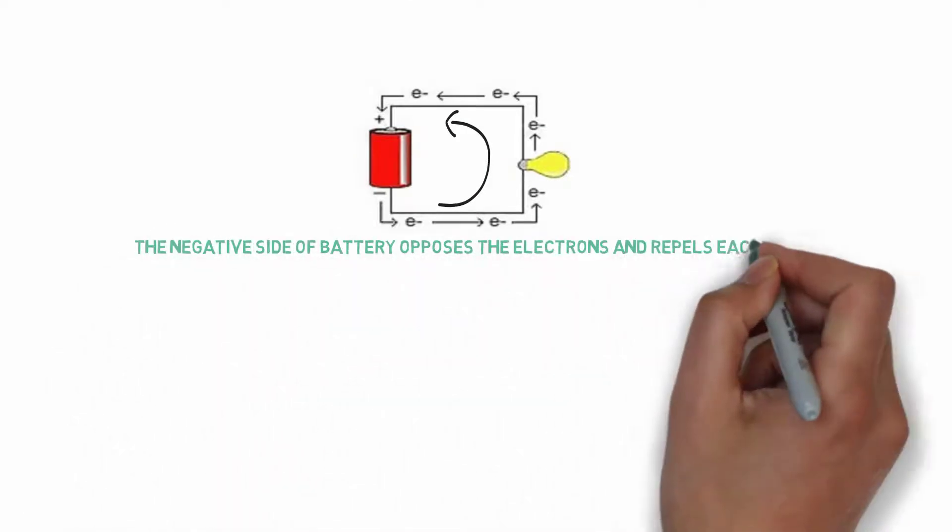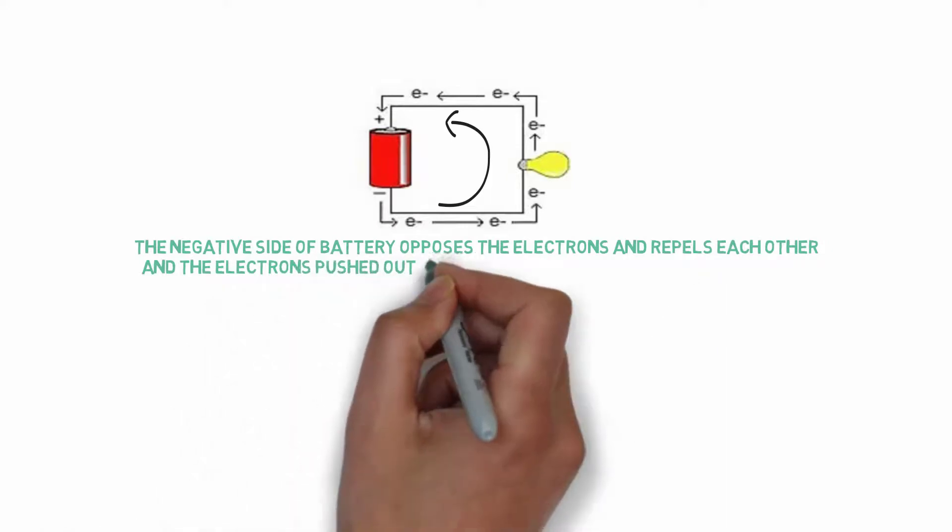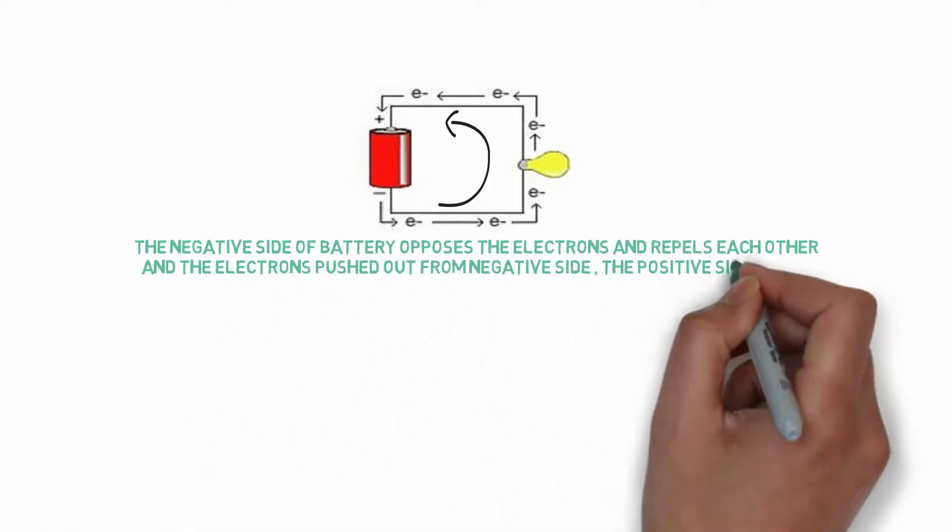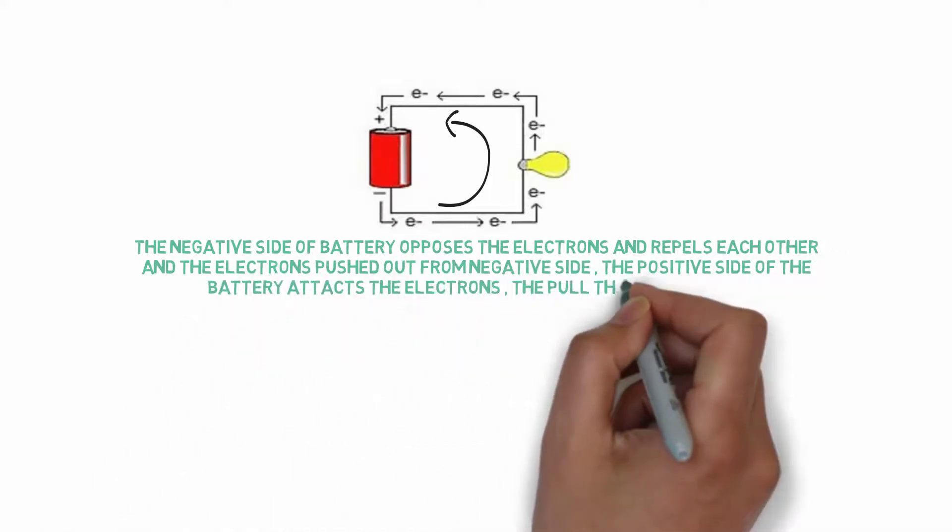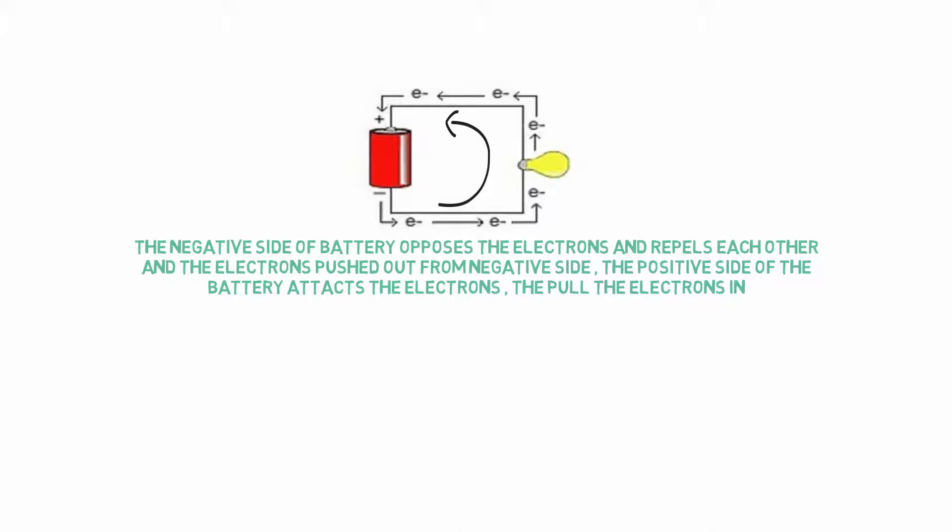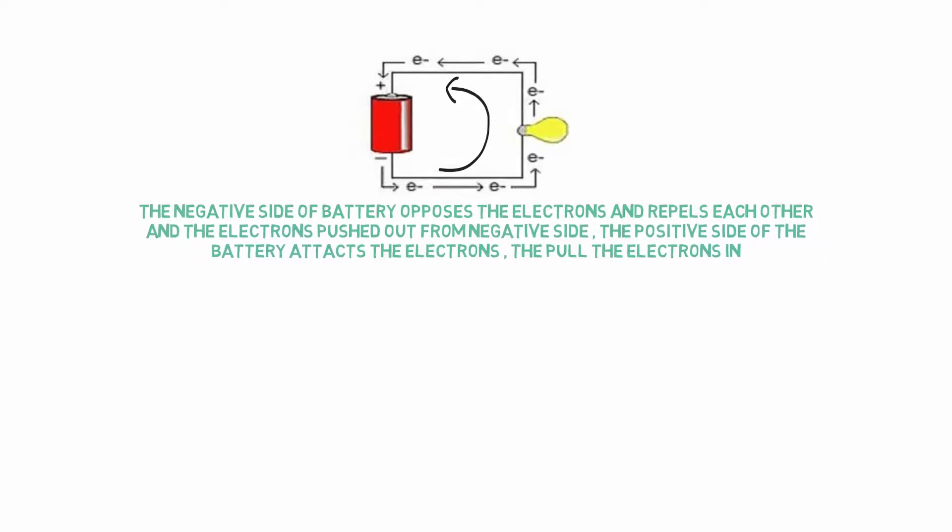The negative side of the battery opposes the electrons and repels each other, and the electrons push out the negative side. The positive side of the battery attracts the electrons then pulls electrons into the battery.